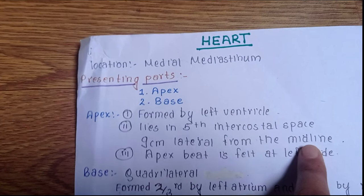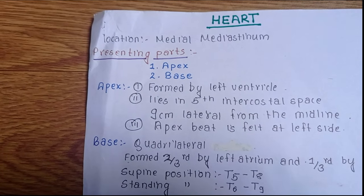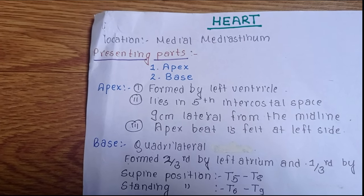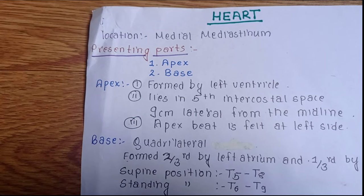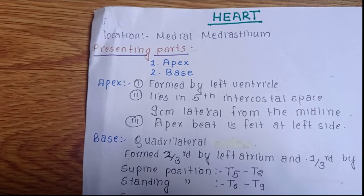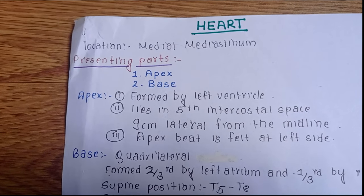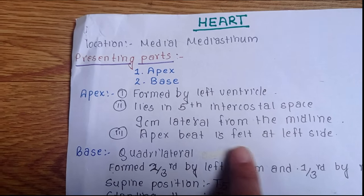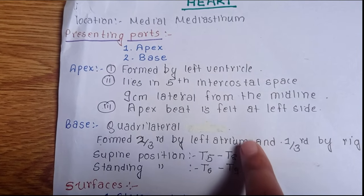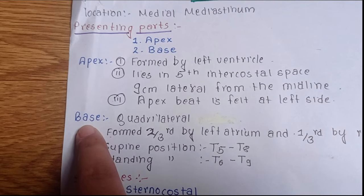The heart actually lies in the midline or middle of the chest, not on the left side. But since the apex lies towards the left and the beat is felt towards the left, we assume that the heart lies on the left side. In actuality, the apex beat is felt at the left side.